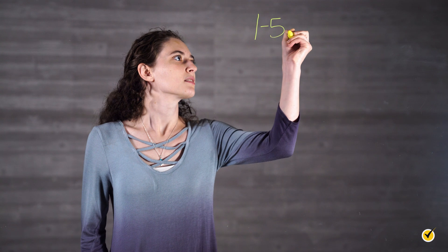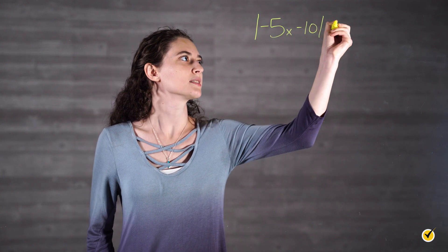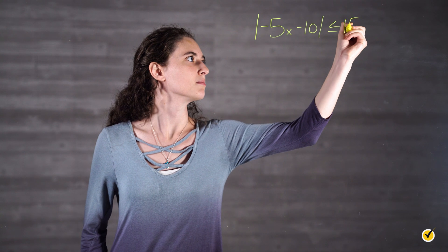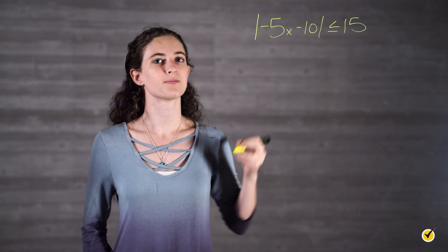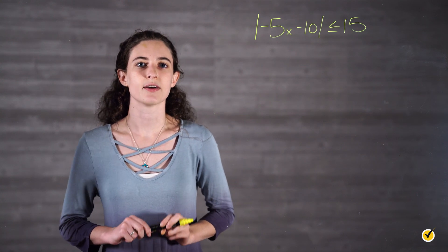I want you to try one more, but this time pause the video and try to figure it out yourself. Then check your steps with mine. The absolute value of negative 5x minus 10 is less than or equal to 15. First, remove the absolute value signs and place your expression between negative 15 and 15.